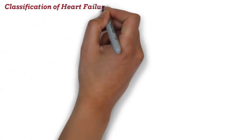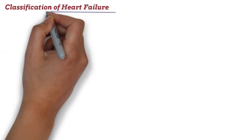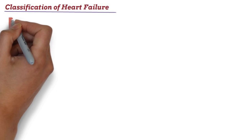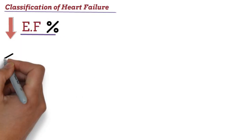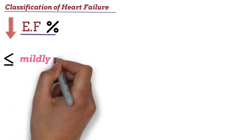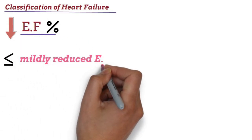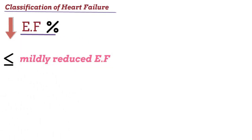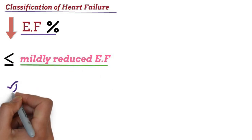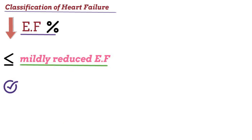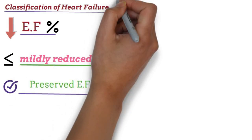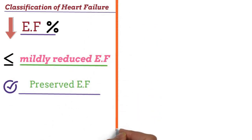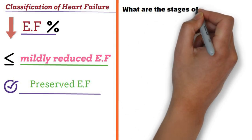Classification of Heart Failure includes: Heart Failure with Reduced Ejection Fraction, Heart Failure with Mildly Reduced Ejection Fraction, and Heart Failure with Preserved Ejection Fraction. What are the stages of heart failure?